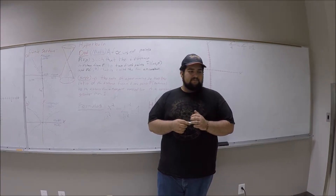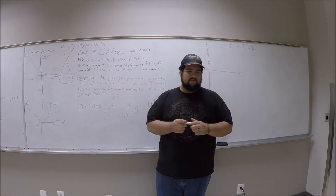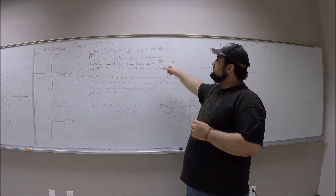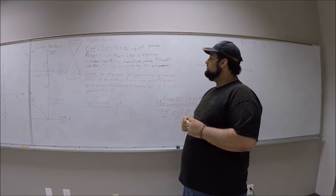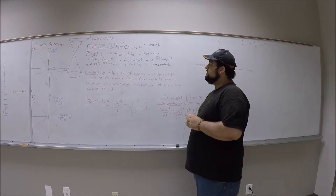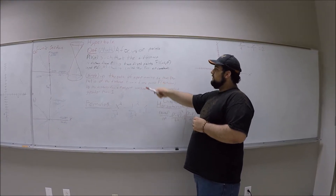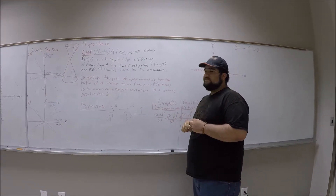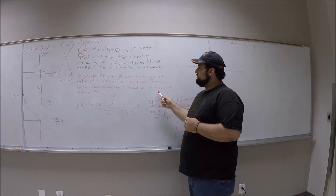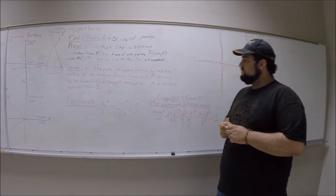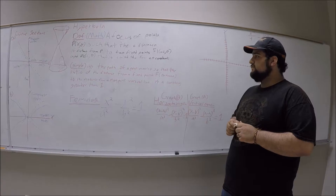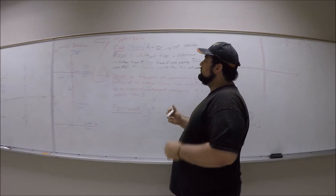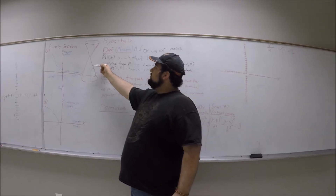To put an ellipse on a graph, we have a major axis and a minor axis, along with two foci points. The major axis is always the longest length and the minor axis is the lesser length. This gives us a horizontal major axis, a vertical major axis with two foci points, and a case where the center is not at the origin.